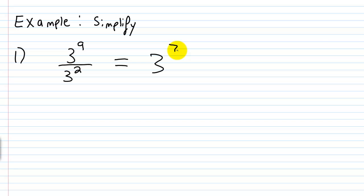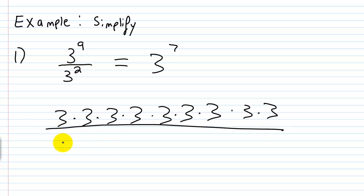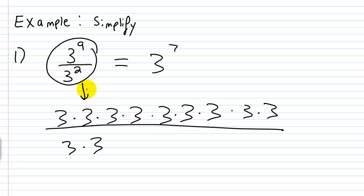To see how this works, think of 3 to the ninth power as 3 times 3 times 3 times 3 times 3 times 3 times 3 times 3 times 3 — nine factors — over 3 squared. We can cancel two factors of 3 in the numerator with the two factors of 3 in the denominator, leaving seven factors of 3, which is 3 to the seventh power. That's how this works.